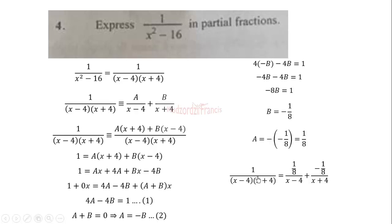So it means that our partial fraction is actually this. We substitute A and B into the expression here. And this is the same as 1 over 8(x minus 4) minus 1 over 8(x plus 4).